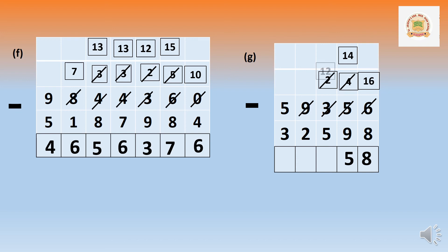Two cannot minus 5 — borrow from 9, which becomes 8. Two becomes 12. Twelve minus 5 equals 7. Nine has become 8. Eight minus 2 equals 6. No need to borrow. Five minus 3 equals 2. Answer is 26,758.